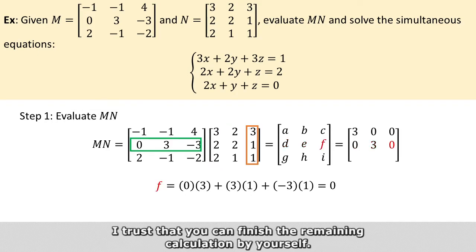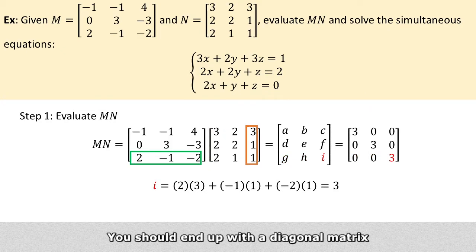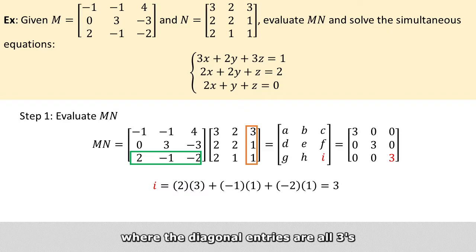You can finish the remaining calculation by yourself. You should end up with a diagonal matrix where the diagonal entries are all 3s, and everywhere else is 0.